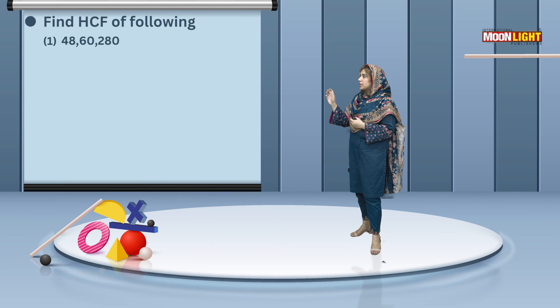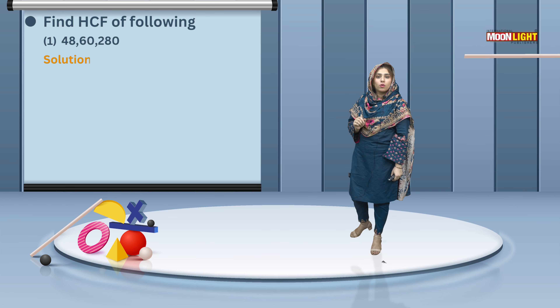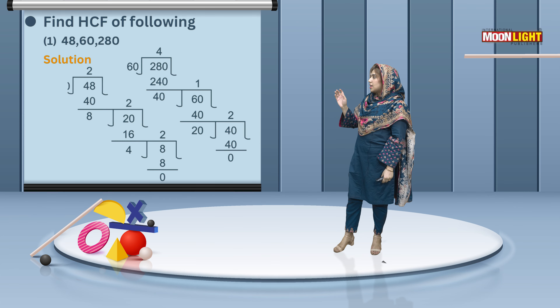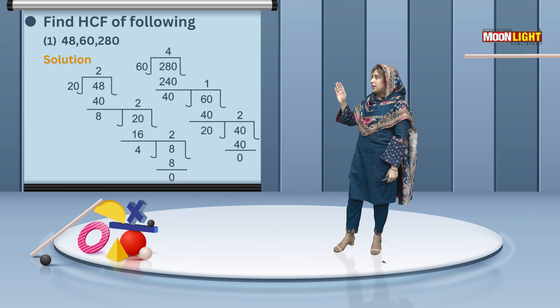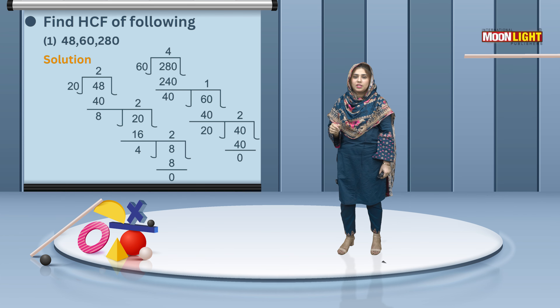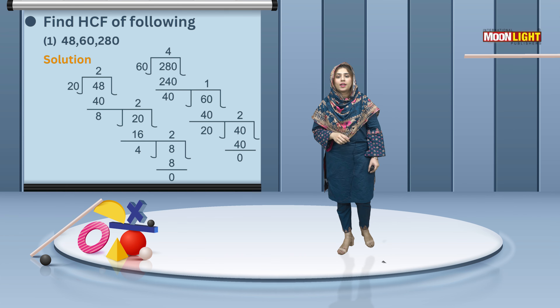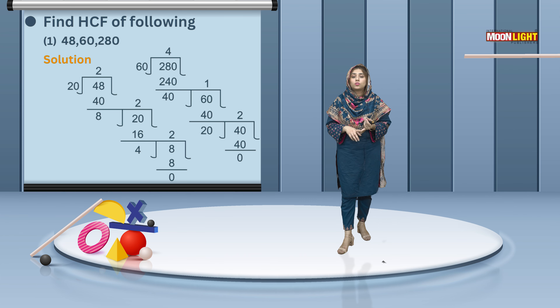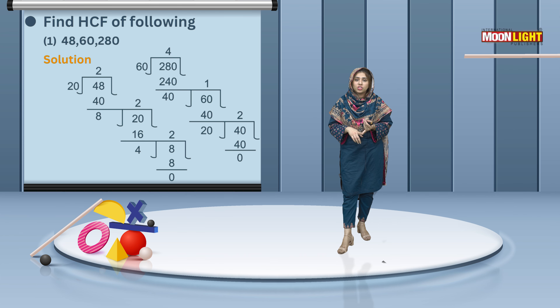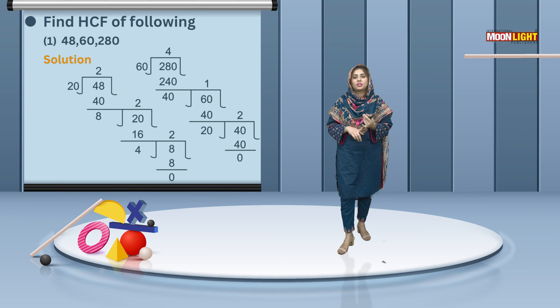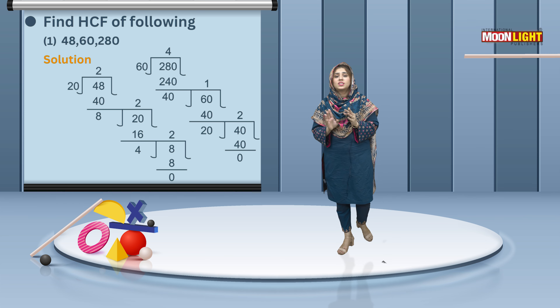The result we get is the LCM. In this way, for question number six, you have to find new numbers. You have to find the LCM or HCF of 4860 and 2881.